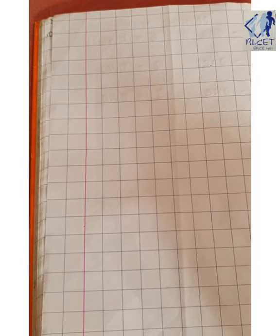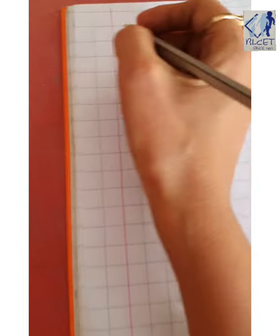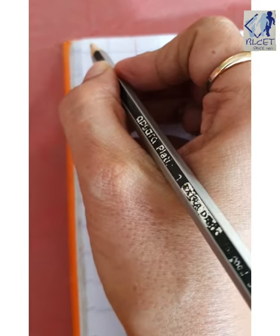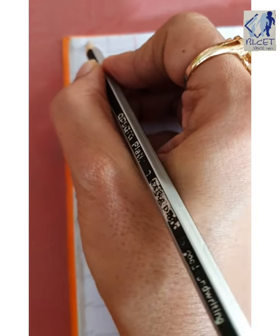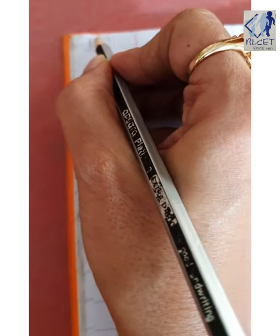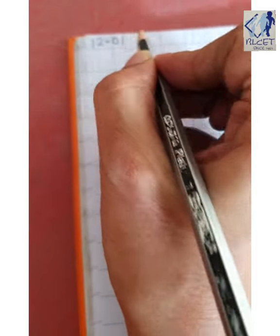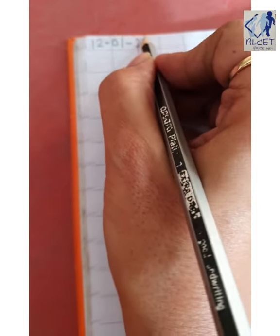Good afternoon children. We are going to write today number names 1 to 10. So before starting the work, let us write the date. Today's date is 12-01-21.